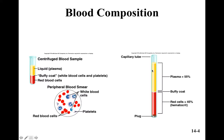This is the blood lecture. Blood composition: if we had centrifuged a sample of blood, this is what we would see. Blood functions: it transports vital substances for our body, maintains the stability of our interstitial fluid, and distributes heat.